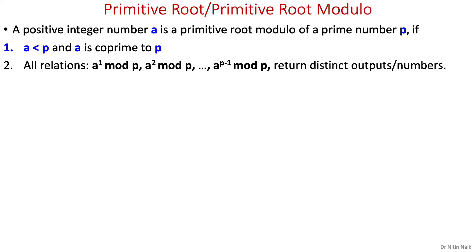When we call a number a primitive root: any positive integer a is a primitive root modulo of a prime number p if it satisfies two conditions. First, a is smaller than p and a is co-prime to p. Second, all the relations from a to the power 1 mod p to a to the power p minus 1 mod p should return distinct outputs.